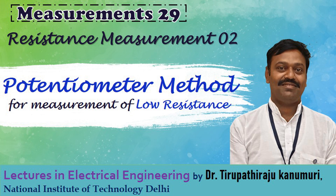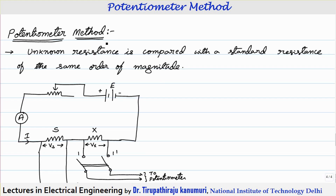Hi all. Today we are going to discuss the potentiometer method for measurement of low resistance. In this method, the unknown resistance is compared with a standard resistance of the same order of magnitude.